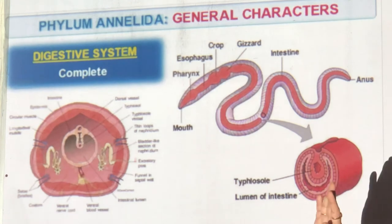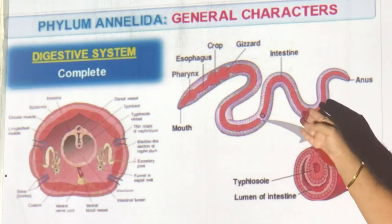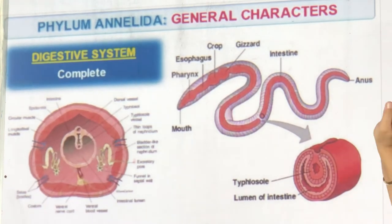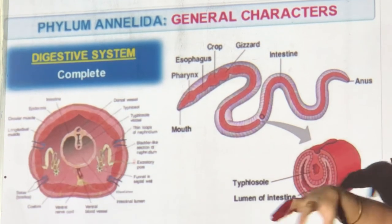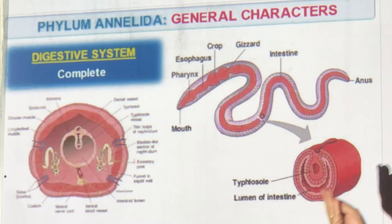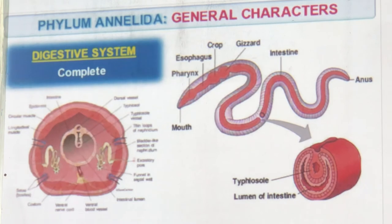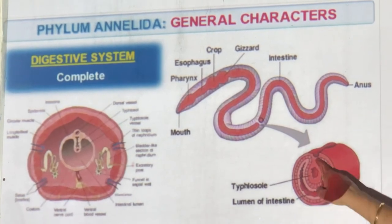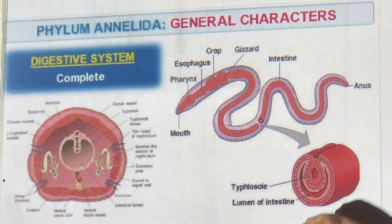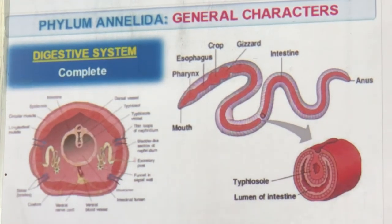The digestive system in Annelida is complete: mouth, pharynx, esophagus, crop, gizzard, intestine, and anus — complete. The intestine has folds called typhlosole to slow food absorption. An earthworm takes in soil but gets only half to one percent organic matter, so if it eats one kilogram of mud it gets only ten grams of food. The folded intestine increases absorption area — like a tongue inside slowing food down.